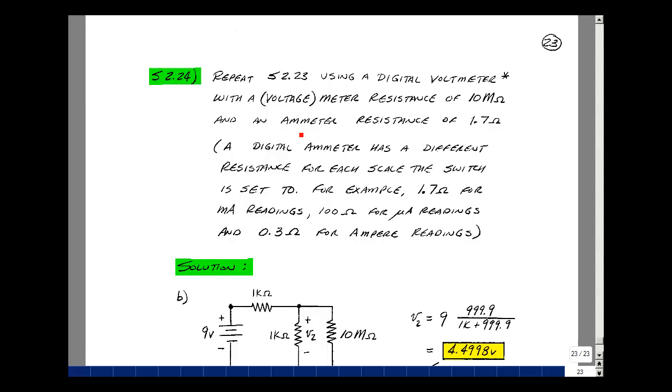Now when you put it in the ammeter setting, the equivalent resistance that you see depends on what scale you're on. If you're measuring in milliamps, it's about 1.7 ohms. If you're measuring microamps, it's about 100 ohms. If you're measuring amperes, it's around 300 milliohms.